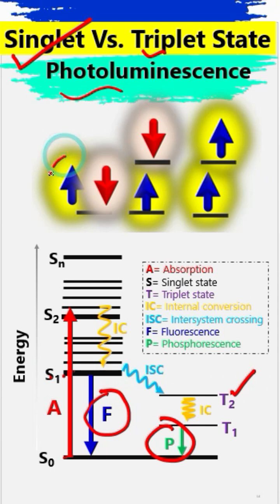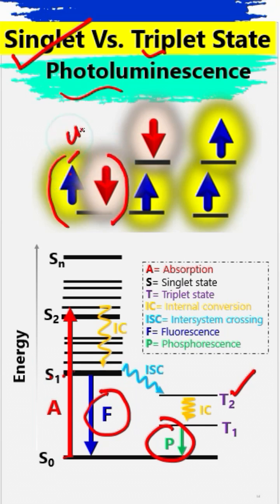This is basically the electron spin. In the singlet ground state, one electron spin is up and one electron spin is down.